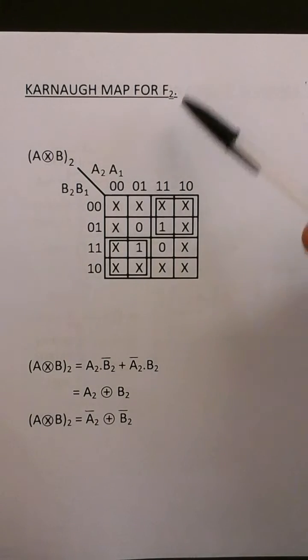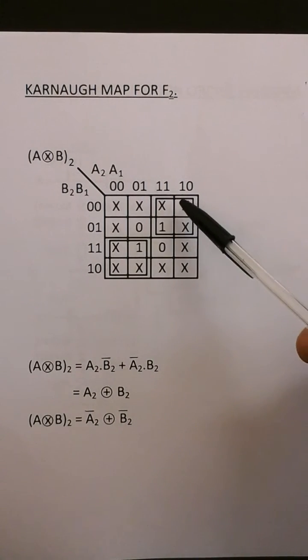Here I have the Karnaugh map for F2. Straightforward. This is A2 and B...